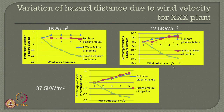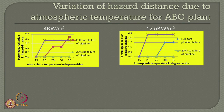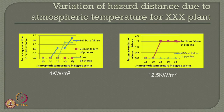The variation of hazard distance due to atmospheric temperature for thermal load intensities of 4 and 12.5 kilowatt per square meter at the ABC plant shows that after approximately 20 to 25 degrees Celsius, the hazard distance practically remains constant — except for full bore rupture, where the hazard distance increases further with increasing temperature. A similar trend is seen for the XXX plant: for full bore rupture, the thermal intensity layered value plays a major role, increasing the hazard distance after a specific temperature, which is not seen at higher thermal intensity variations.